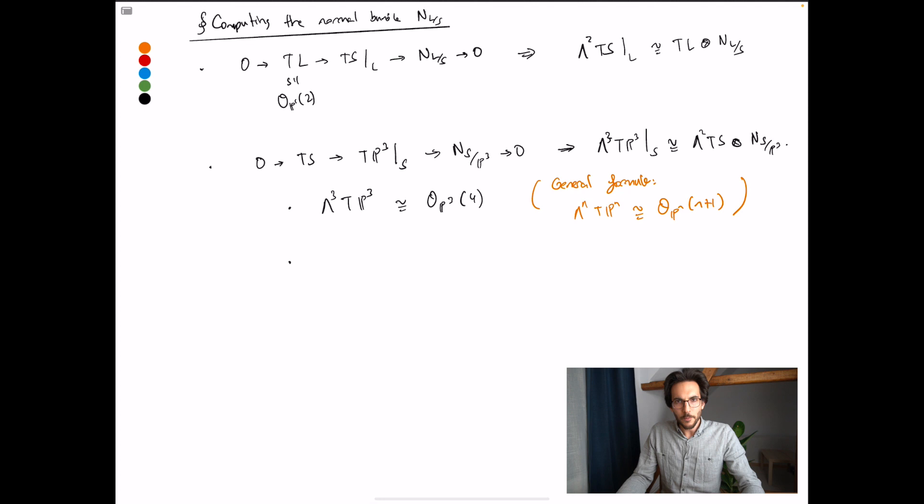Convincing yourself that this is true is harder, but I will say a few things about why it's actually trivially true. NS of P3 ends up being isomorphic to the sheaf of functions on P3 with a pole on S. So let me expand this out. But then this is in fact just isomorphic to the OP3 of D. That's another sheaf, another line bundle.